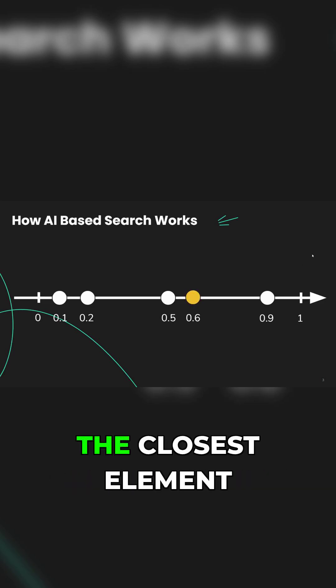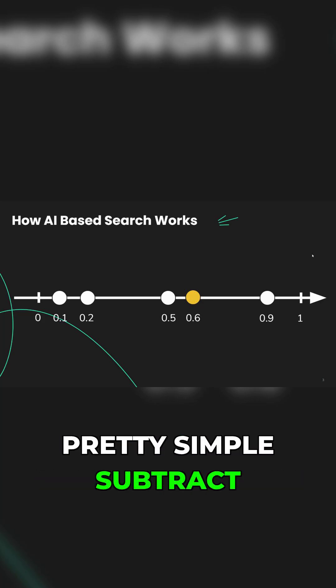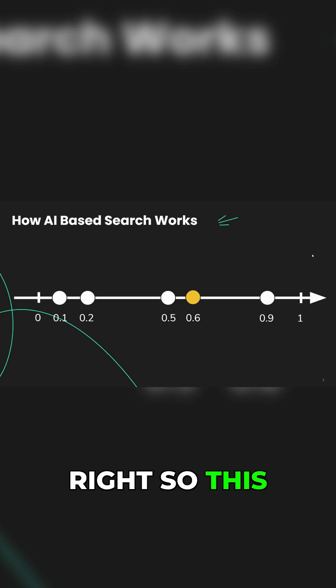And we want to find the closest element to this 0.6. Which one is that? This is going to be 0.5. And how do we calculate the distance? It's pretty simple - we subtract. So this is a one-dimensional space.